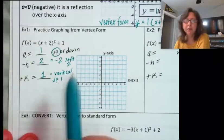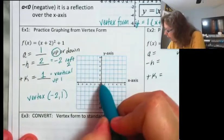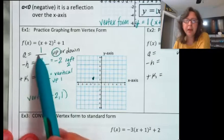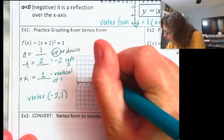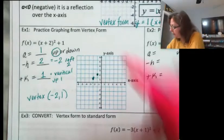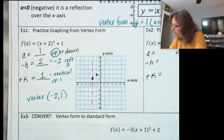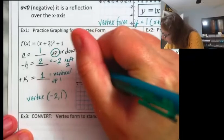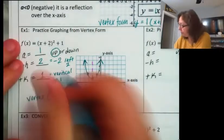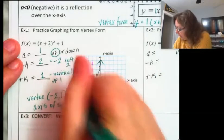Let's go ahead and graph this. My vertex is located at negative 2 comma 1 — left 2, up 1. From the vertex, I go right 1, up 1 for the a value. Let me go ahead and create my axis of symmetry so I can reflect my point over it, and then connect this with a nice curve. Our axis of symmetry is at x equals negative 2.